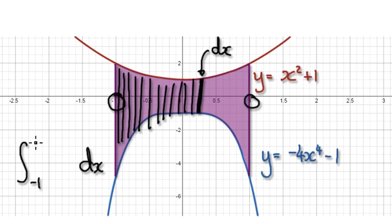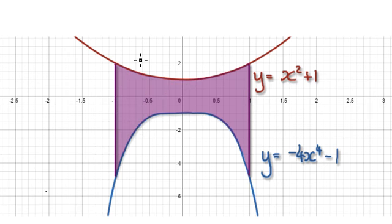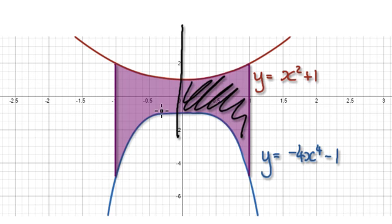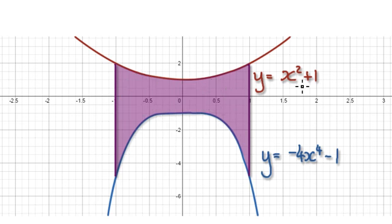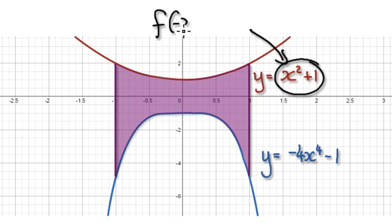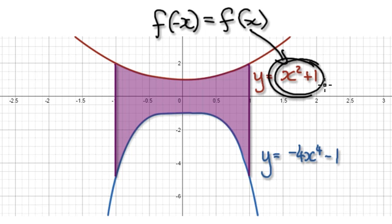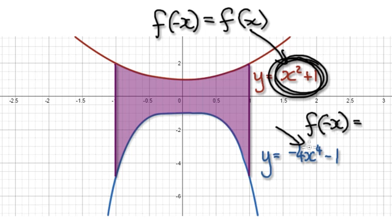Notice that this shape is symmetrical — this side here is exactly the same as this side here. The reason you know that is because both functions are even functions. If you put a negative version of x in, you get the same as the original function. This is even, and this is also even.